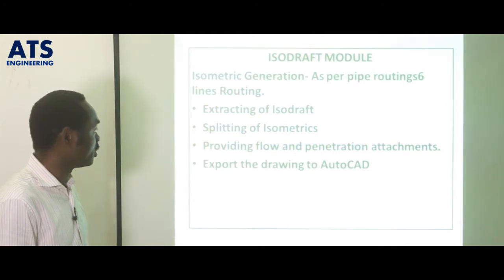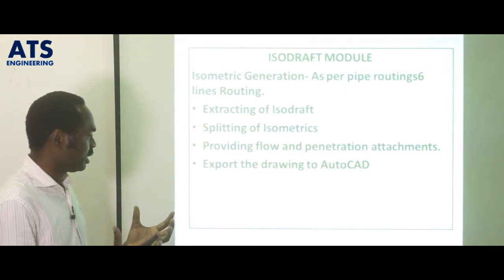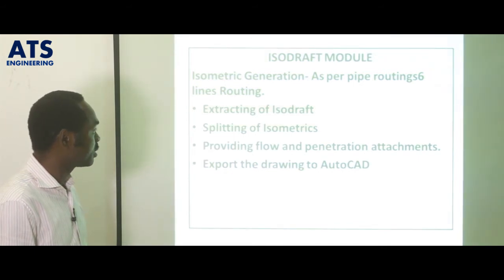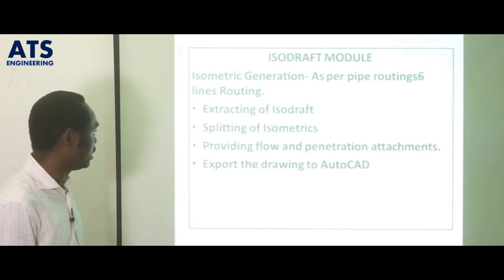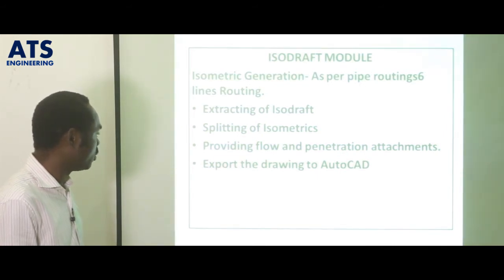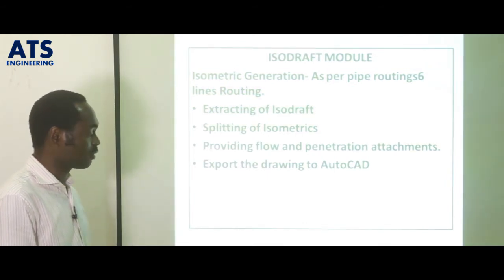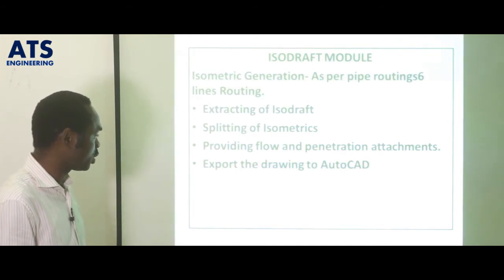In the isodraft module, we will see how we can generate isometrics from the piping we've modeled. We will extract a minimum of 6 lines in the course of the program. We will also see how to split isometrics into sheets, how to provide flow direction on lines and penetration attachments on isometrics, and how to export to AutoCAD for more detail.